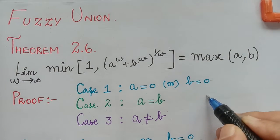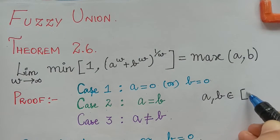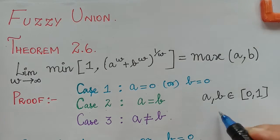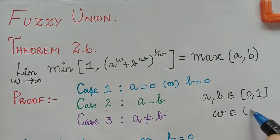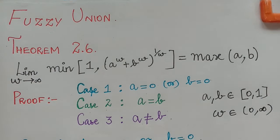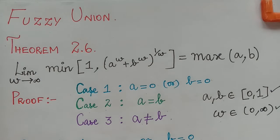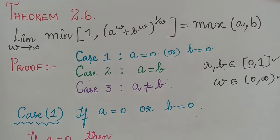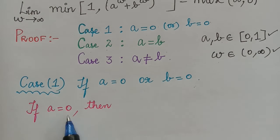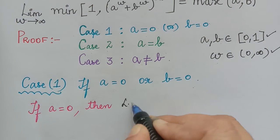I would also like to mention that a and b are chosen from the closed interval [0, 1] and the value of w is chosen from the open interval (0, infinity). These are the limits for a, b, and w. Now in case 1, if a equal to 0 or b equal to 0, as the first case we will consider if a equal to 0 and check the left hand side.